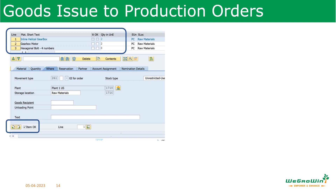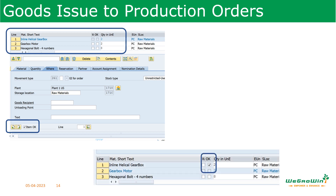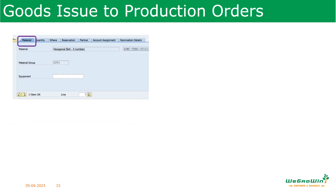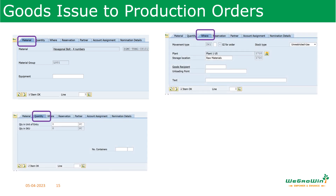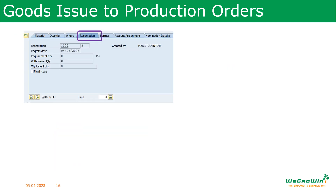For each component, select the item OK checkbox — once checked, the item is marked for goods issue. Under the material tab we see material details, under the quantity tab we see quantity details, and under the WHERE tab we see the storage location from where material will be issued and which plant. Under the reservation tab, the reservation number of the production order for which the components are to be issued is displayed. To view reservation details, use transaction code MB23.